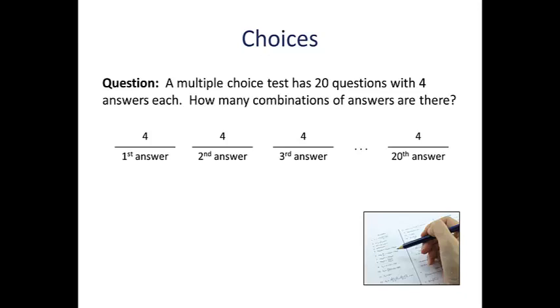Now, from here, we can use the multiplication rule to get our final answer. There are twenty 4s being multiplied together, which means our final result is going to be 4 to the 20th power. If you multiply that out, it comes out to a little more than 1 billion total possible ways that the test can be answered.